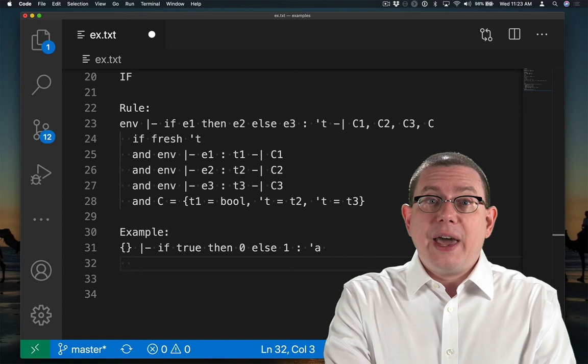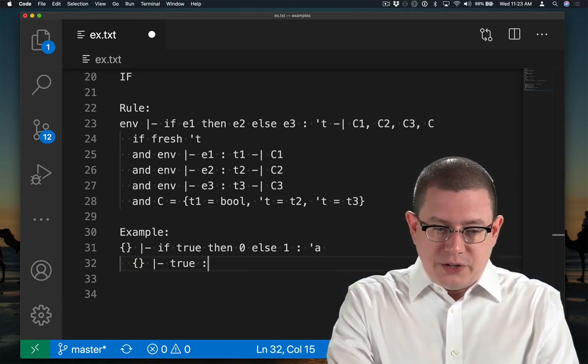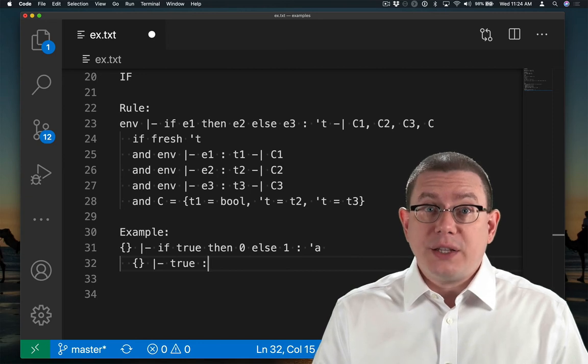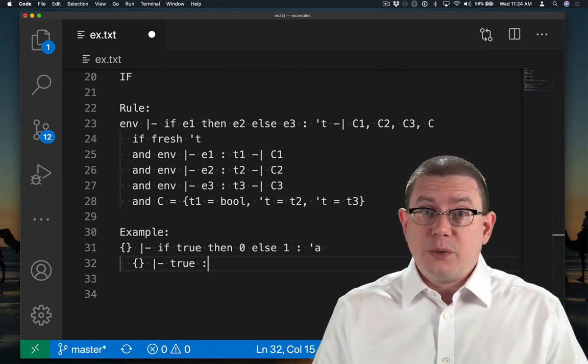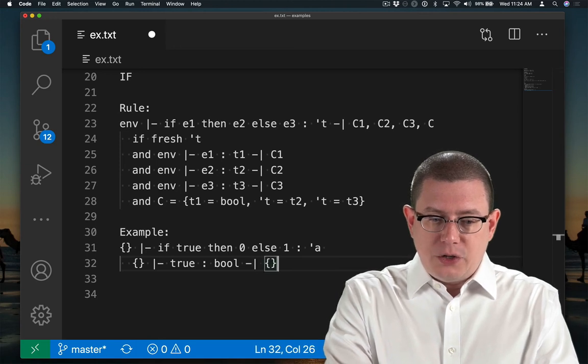So to do that, I need to go ahead and infer the type of the guard. How do I do that? Well, that's a Boolean constant. So we use the rule for constants that we introduced before. That has type bool and generates no constraints.